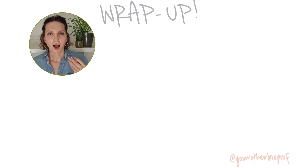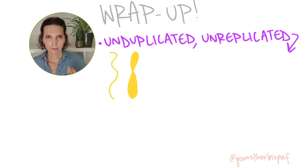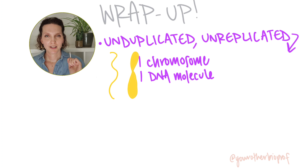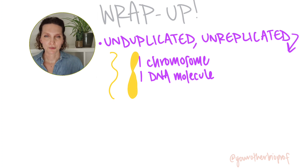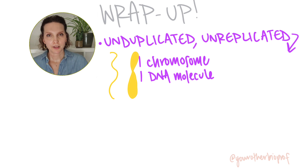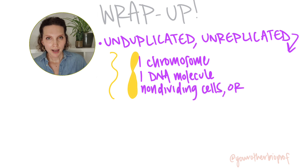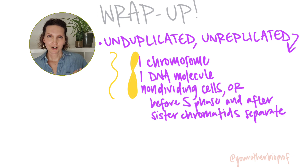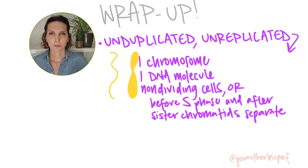Let's do a little wrap-up. An unduplicated or unreplicated chromosome is one chromosome consisting of one molecule of DNA and proteins. You're going to find unduplicated unreplicated chromosomes in cells that are not actively dividing, or that have just started or are wrapping up the process of cellular division.